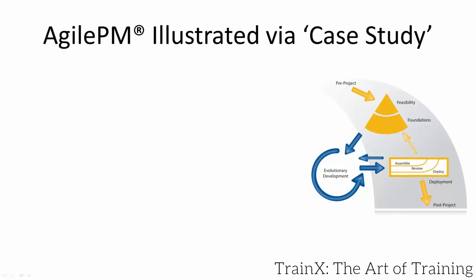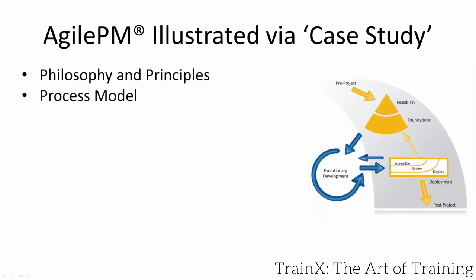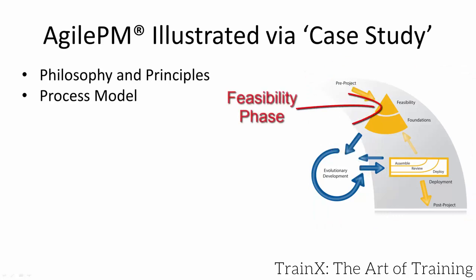First, some quick terminology we'll cover in more depth throughout the video. The philosophy is the big idea — essentially how to gain business value quickly, on time and on budget. The principles help build the mindset and behaviours, bringing the philosophy to life. The process model has phases such as feasibility, and we'll use these phases to create a suitable project lifecycle representing how our project's activities develop through time.